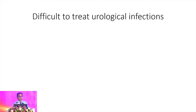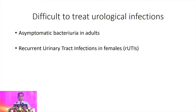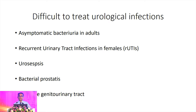I have selected four or five such difficult-to-treat infections for today's discussion: asymptomatic bacteriuria in adults, recurrent urinary tract infection in females, lower urinary tract infections, urosepsis, bacterial prostatitis, and TB of the genitourinary tract.